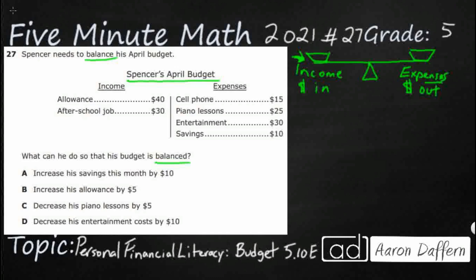He gets an allowance of $40 — so maybe $10 a week — and he's got an after-school job that's pretty good. So let's see how much money he's got: he's got $70. Simple addition, so he's got an income of $70 for April.